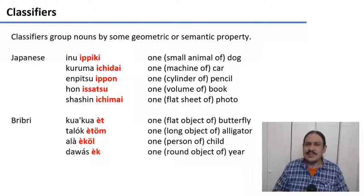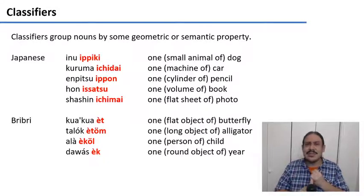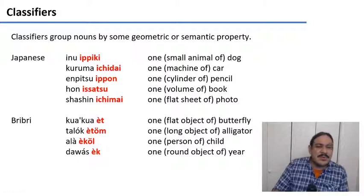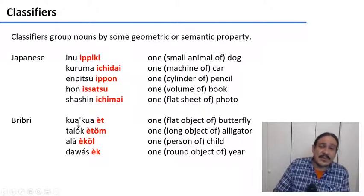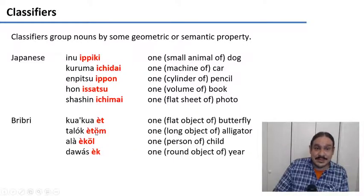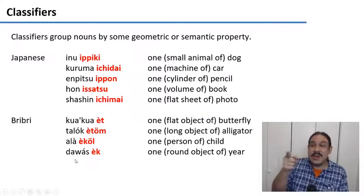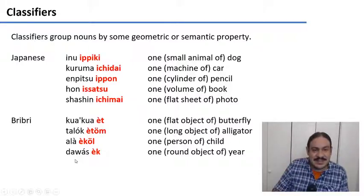Classifiers are fairly common — Chinese and Vietnamese have classifiers, many languages in the Americas have them, and American Sign Language uses classifiers. Here is an example from Bribri: butterflies are flat, so you say 'kua kuaet' — one flat object of butterfly. Alligators are long — 'tarok etum.' Children are people — 'ara ikur.' And years are round because they sort of go back on themselves — 'duas ik.'